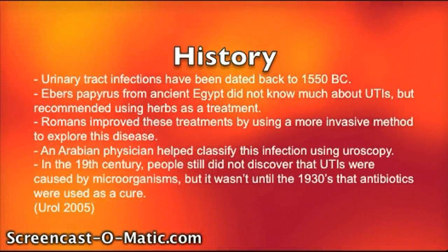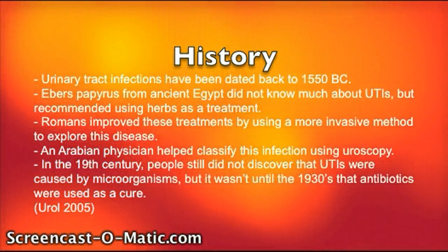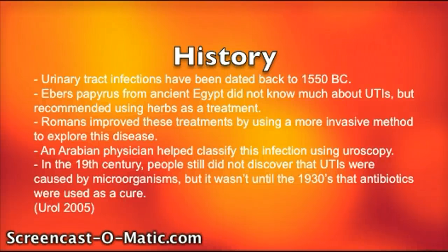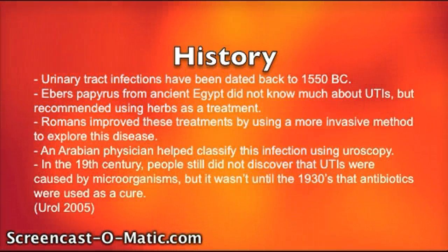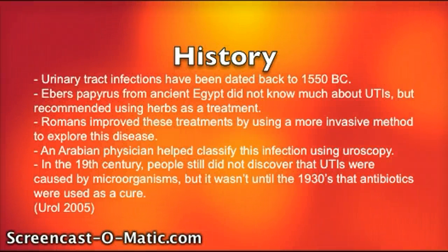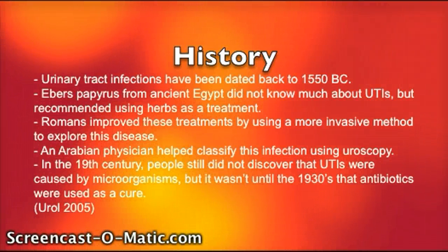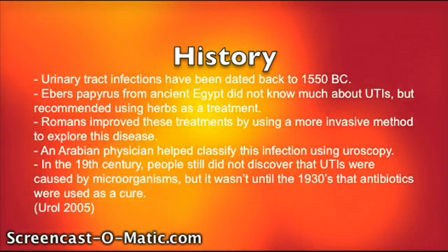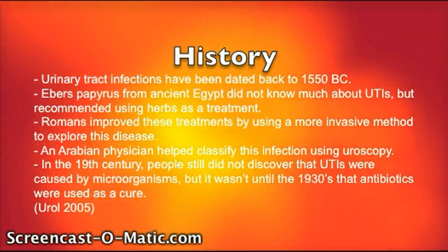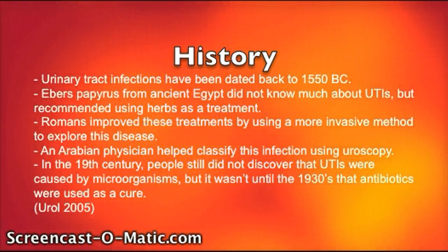History! Urinary tract infections have been dated back to 1550 B.C. The Ebers Papyrus from Ancient Egypt did not know much about UTIs, but recommended using herbs as a treatment. Romans improved these treatments by using a more invasive method to explore this disease. An Arabian physician helped classify this infection using uroscopy. In the 19th century, people still did not discover that UTIs were caused by microorganisms, but it wasn't until the 1930s that antibiotics were used as a cure.